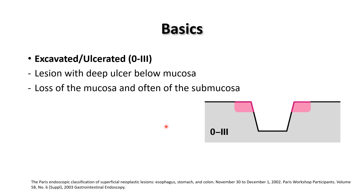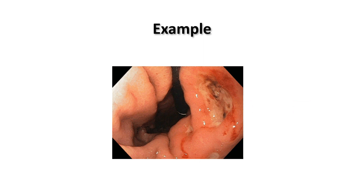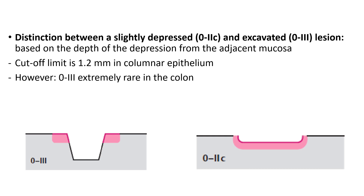Type 3 is actually a deep ulcer. These are lesions with a deep ulcer below the mucosa, with loss of the mucosa, and often the submucosa is visible. The distinction from type 2C is based on depth: when the depression is more than 1.2 mm, this is a deep lesion classified as type 3. This is an example of a type 3 lesion. There is a clear distinction between slightly depressed 2C and excavated type 3, with a cut-off level of 1.2 mm in columnar epithelium.